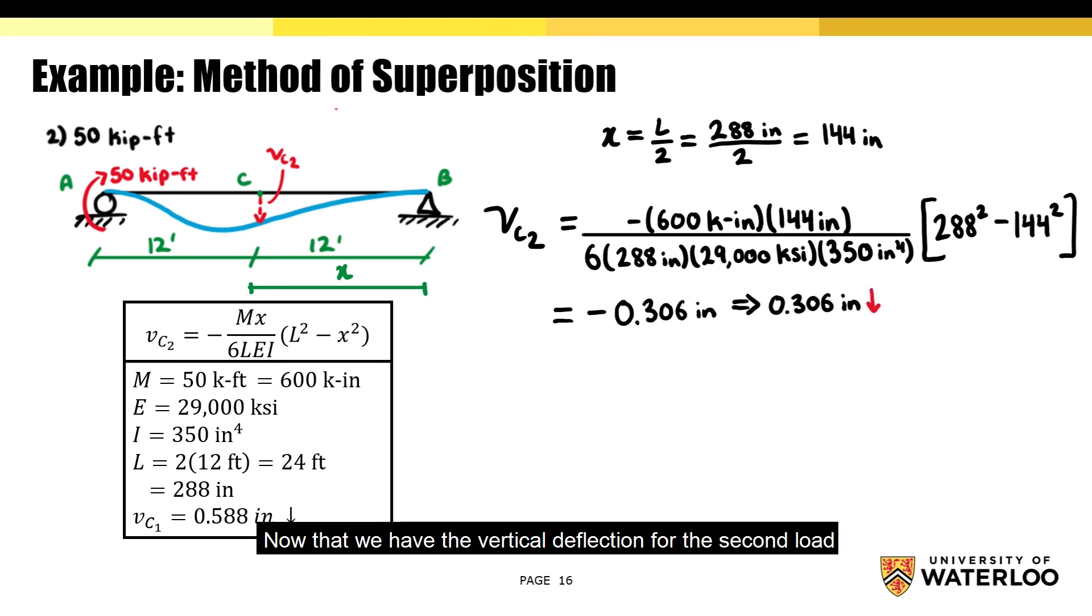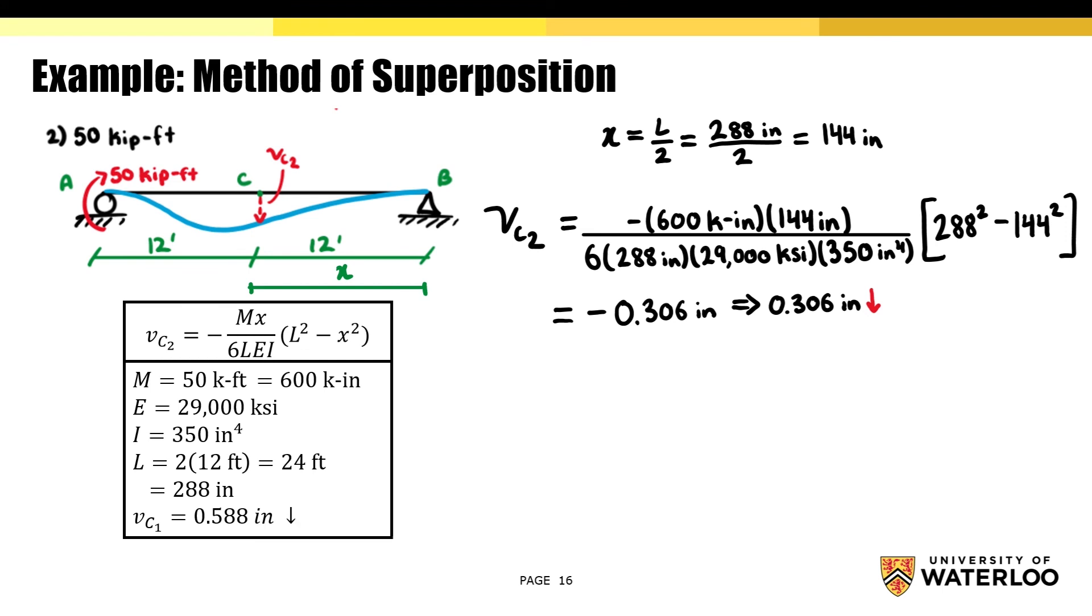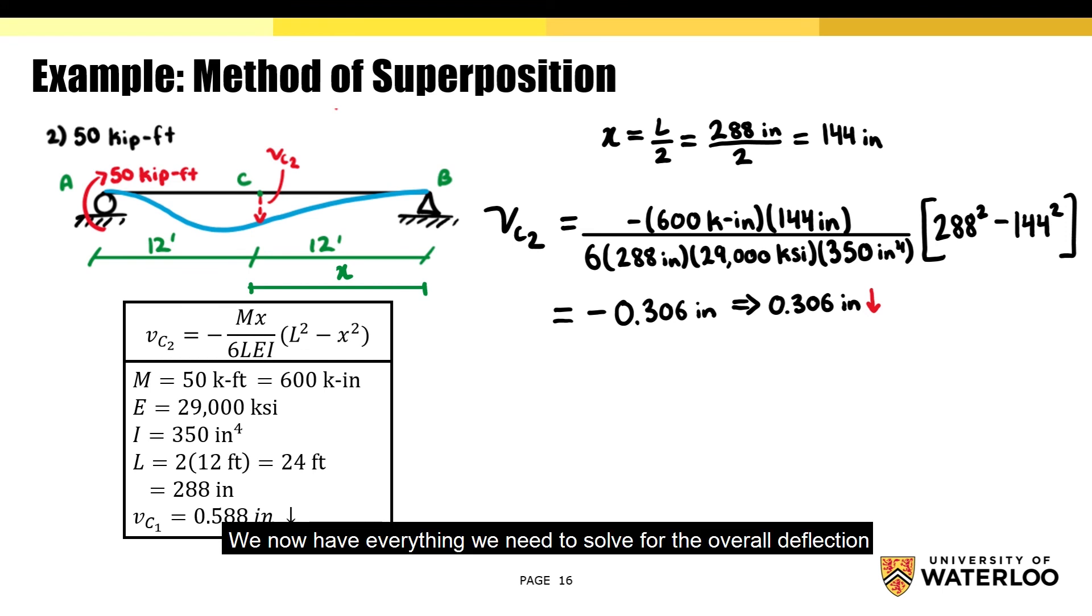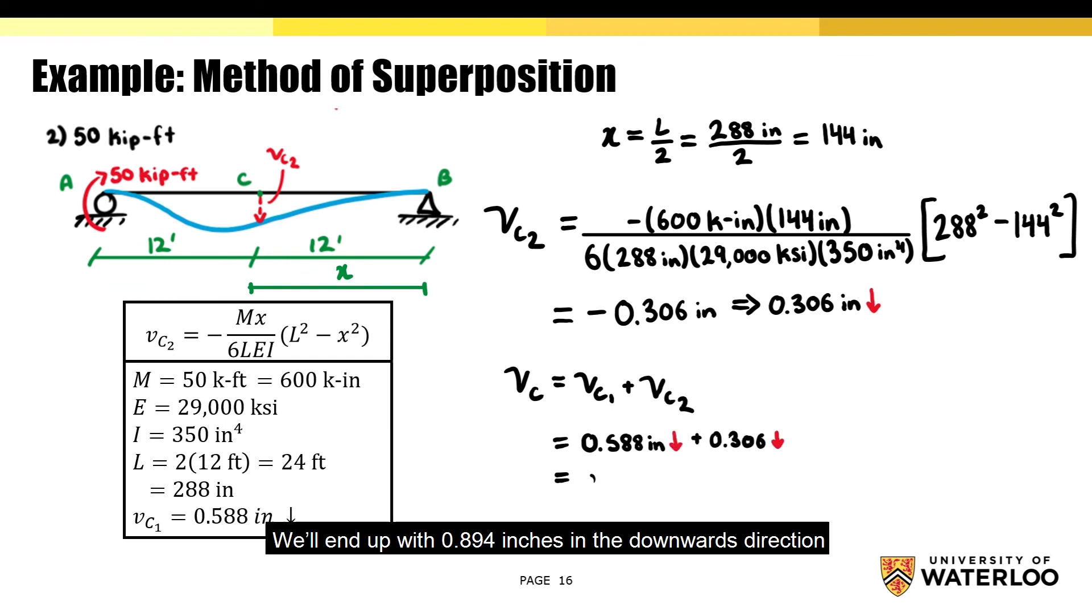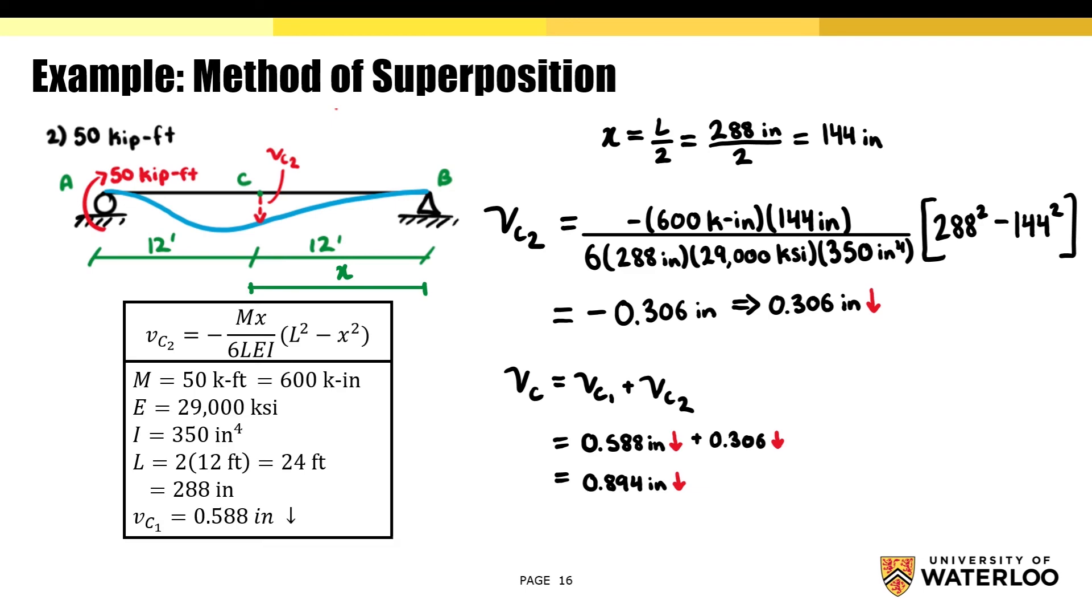Now that we have the vertical deflection for the second load, we now have everything we need to solve for the overall deflection. If we sum the vertical deflection produced by both loads, we'll end up with 0.894 inches in the downwards direction. And this is the final answer for the problem.